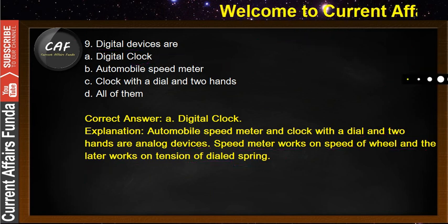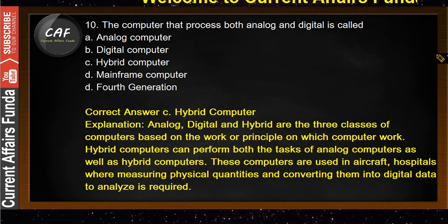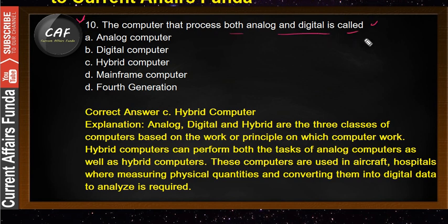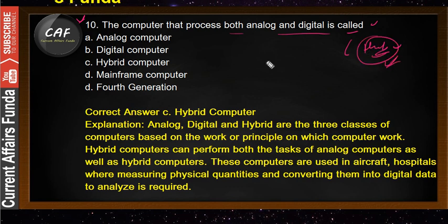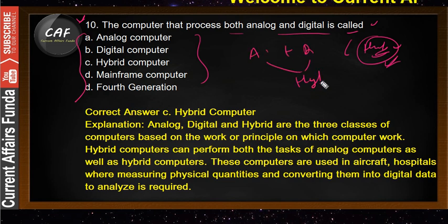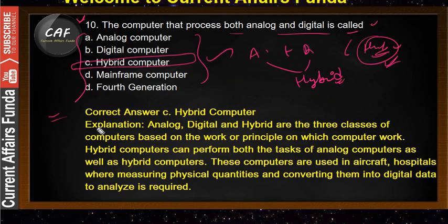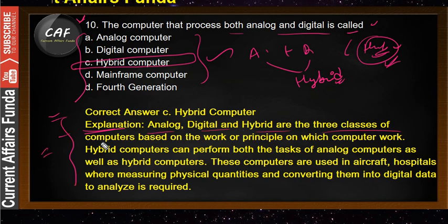Problem number 10: the computer that processes both analog and digital is called the hybrid computer. Hybrid means a combination of analog plus digital. Option C is the correct answer. Analog, digital, and hybrid are the three classes of computers based on the principle on which they work.